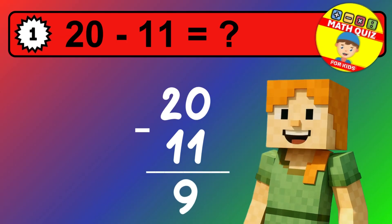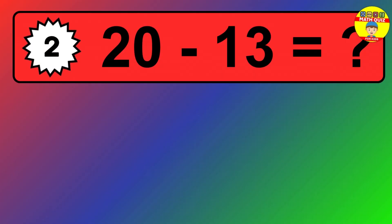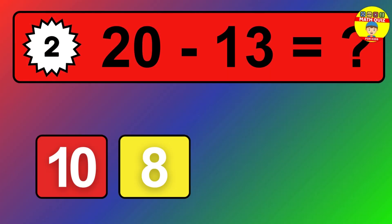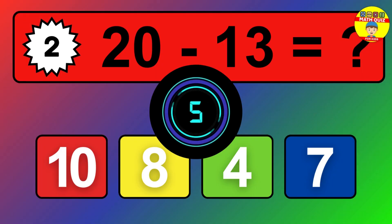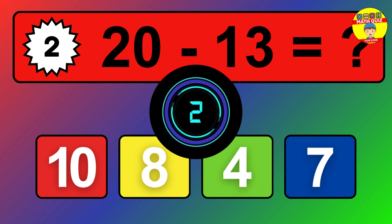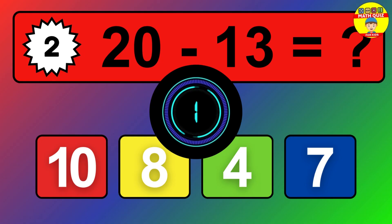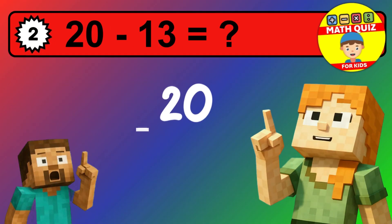Let's solve this step by step. We start with the units. 0 minus 4 is not possible, so we need to regroup. We take one 10 from the tens column. Now we have two tens, and the units become 10. Now we subtract. 10 minus 4 is 6. Then we go to the tens. 2 minus 1 is 1. The final answer is 16.